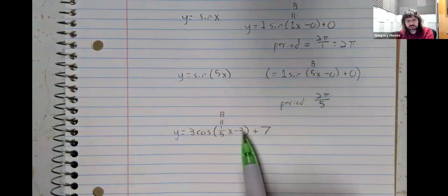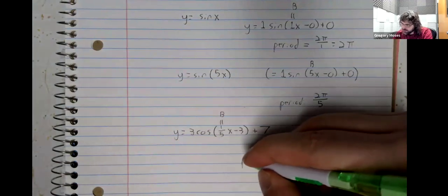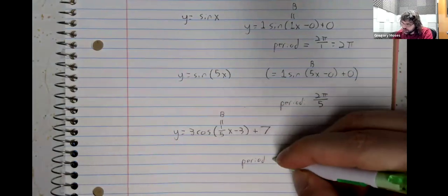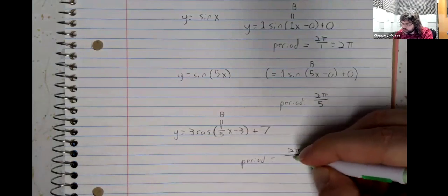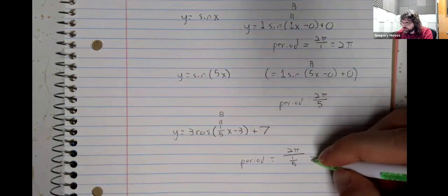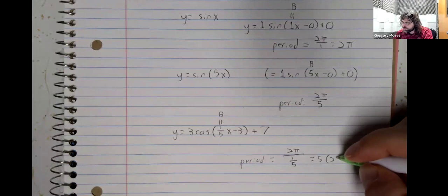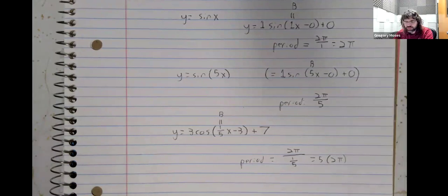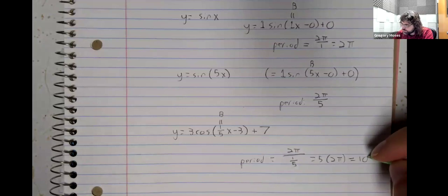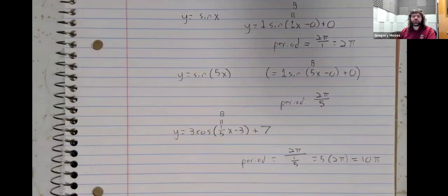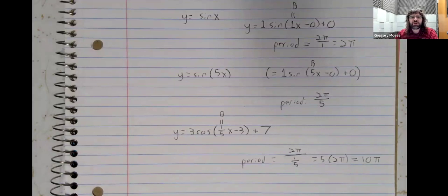This 3, this 3, and this 7 aren't doing anything. And the period is 2π divided by 1/5, which we can rewrite. Dividing by a fraction is the same as multiplying by the reciprocal. So the reciprocal of 1/5 is 5, and the period is 10π.